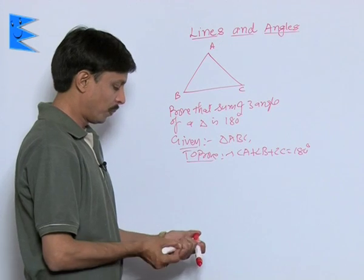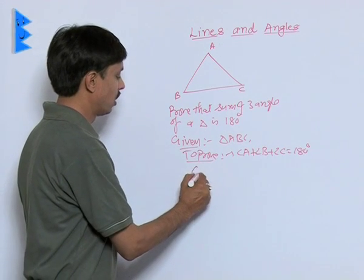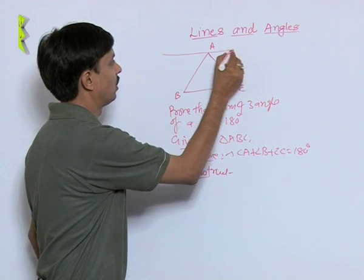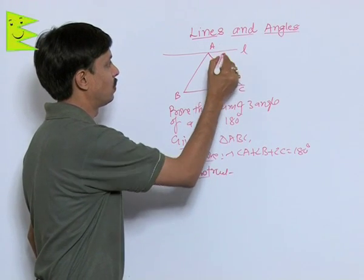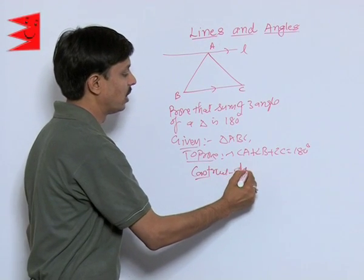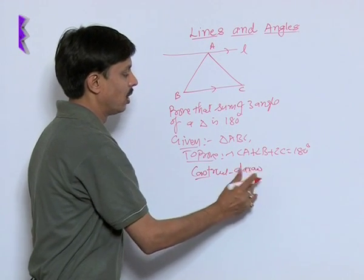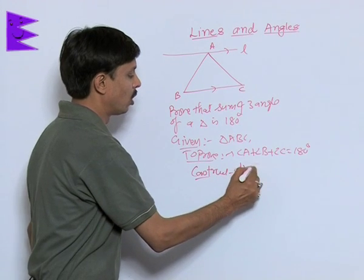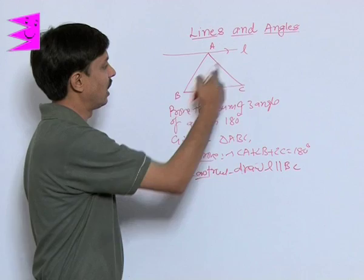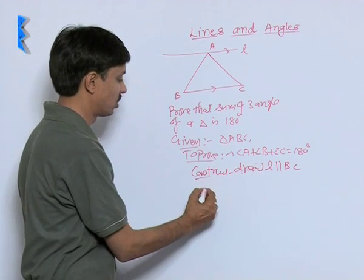In order to prove this we have to take one construction. What is the construction? Draw a line L through the vertex A which is parallel to BC. You can write here draw line L parallel to BC. This is construction.